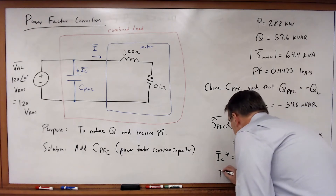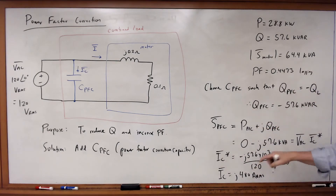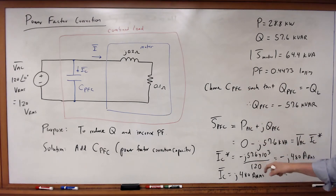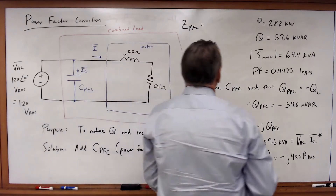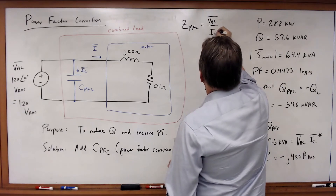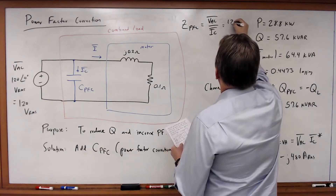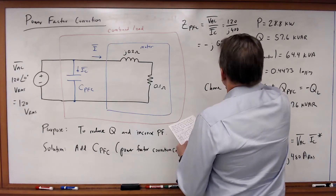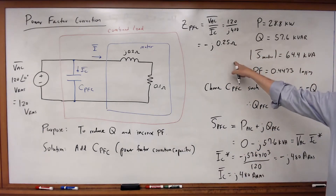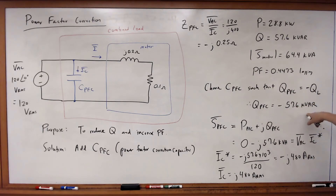And now I know that I_C must therefore be equal to j times 480 amps RMS. From here, the impedance of the capacitor Z_PFC must be equal to V_AC divided by I_C — right from the definition of impedance, Z equals V over I. Therefore this equals 120 divided by j480, which equals minus j0.25 ohms. So I've got a negative impedance for a capacitor, which will result in a reactive power of minus 57.6 kVAR across that 120-volt load.